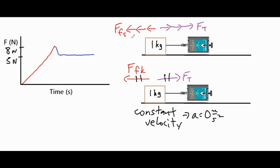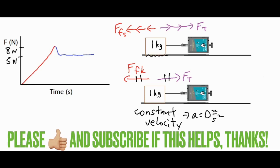Static friction deals with an object at rest, so there are stronger molecular forces keeping the surfaces together, and the object is essentially sitting in the grooves of the surface. An object at rest has inertia keeping it at rest, so for all those reasons it's harder to move. Once it's moving, it cruises over the surface irregularities and its inertia keeps it in motion, so kinetic friction doesn't push back quite as much.